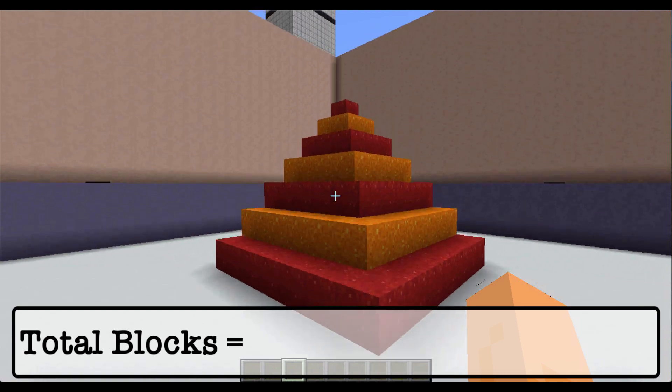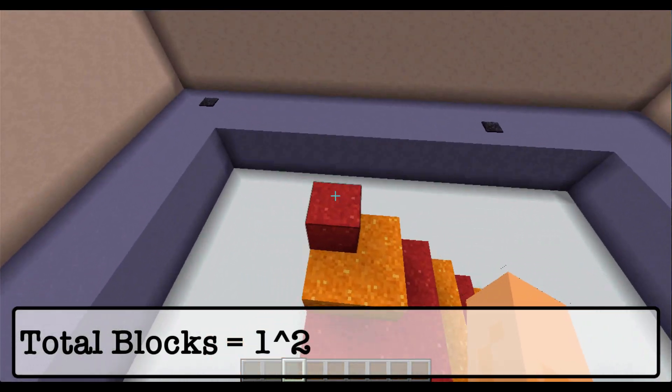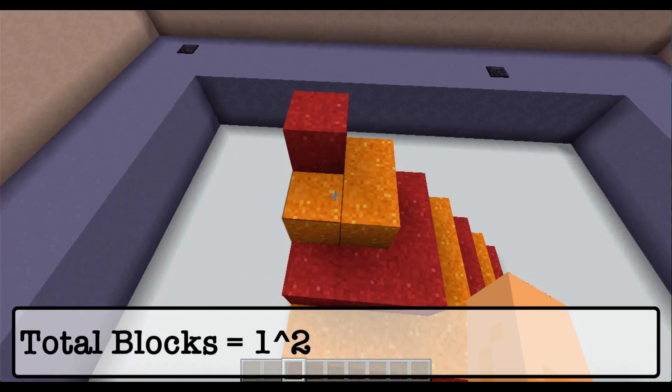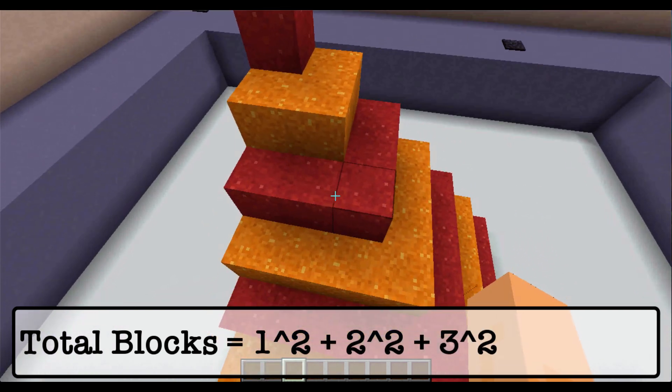I laid out a pyramid of concrete powder. This top layer has a 1 by 1 square of concrete powder. The next layer is a 2 by 2 square. The next layer is a 3 by 3 square.